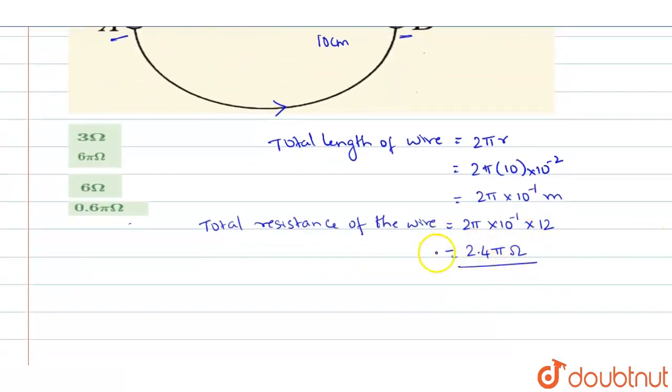So the total is 2.4π. And so now the resistance of each half will be equal to 2.4π divided by 2 which gives you 1.2π ohms.